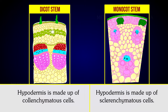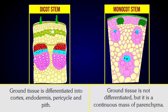The ground tissue is differentiated into cortex, endodermis, pericycle, and pith in dicot stems. The ground tissue is not differentiated but is a continuous mass of parenchyma in monocot stems.